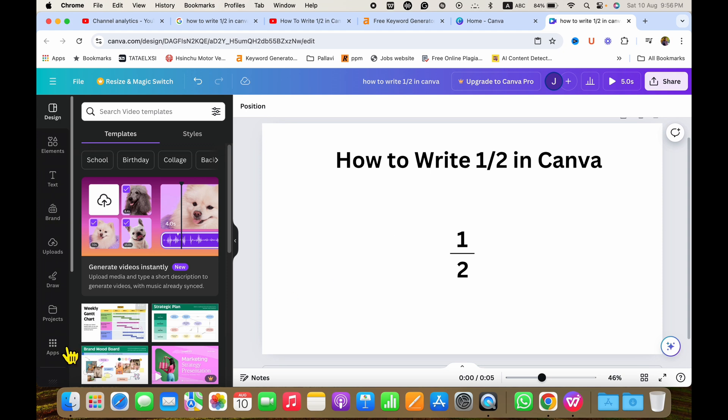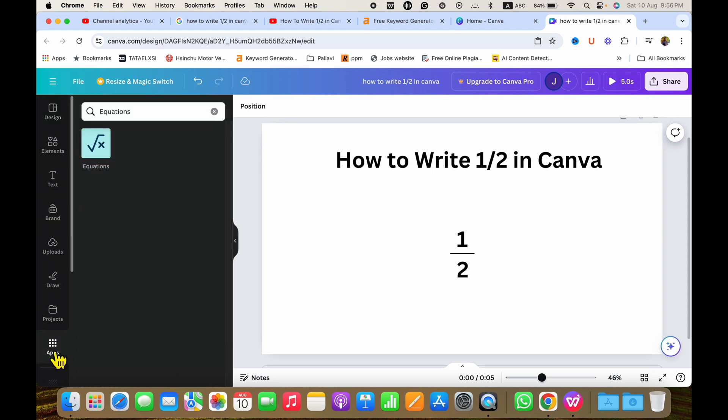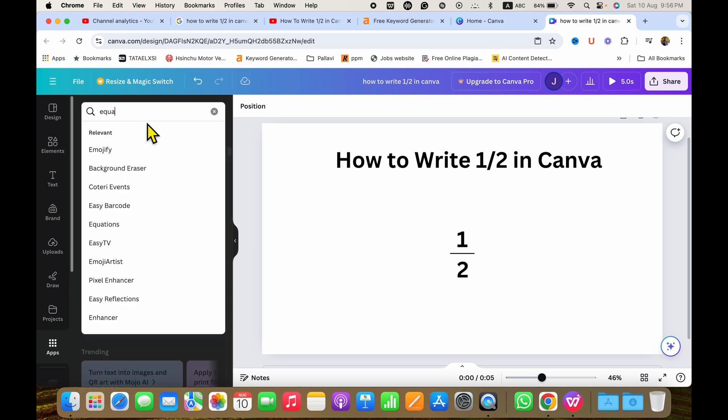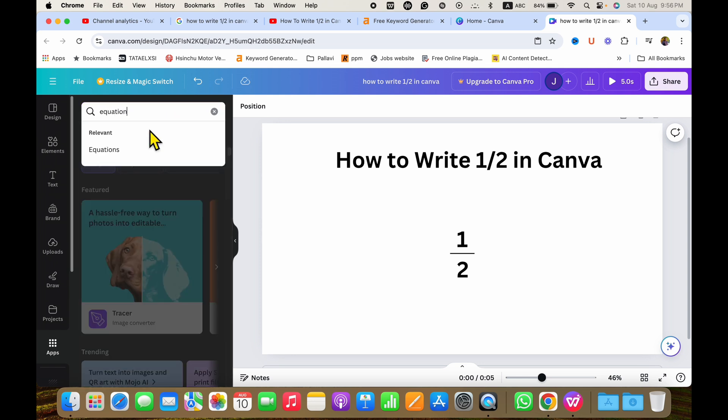First you need to click here on the apps option and here in the search bar type equation and then select this option equations.